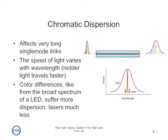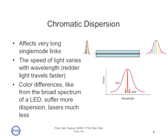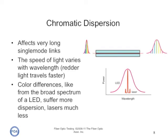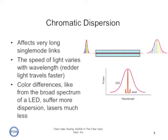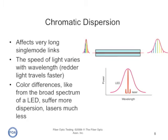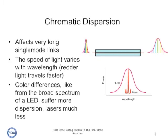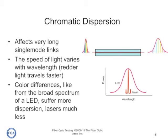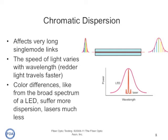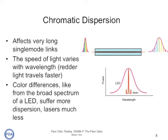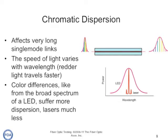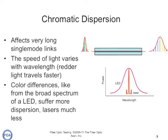Chromatic dispersion can be very important in long single mode links. The problem is the speed of light varies with wavelength, so the redder light travels faster and gets to the receiver first, causing pulse dispersion. Color differences, like the broad spectrum of an LED, suffer more dispersion and lasers less so, but in a long single mode length, chromatic dispersion can be a very important parameter to measure to ensure that single mode fiber can carry very high bit rate signals.